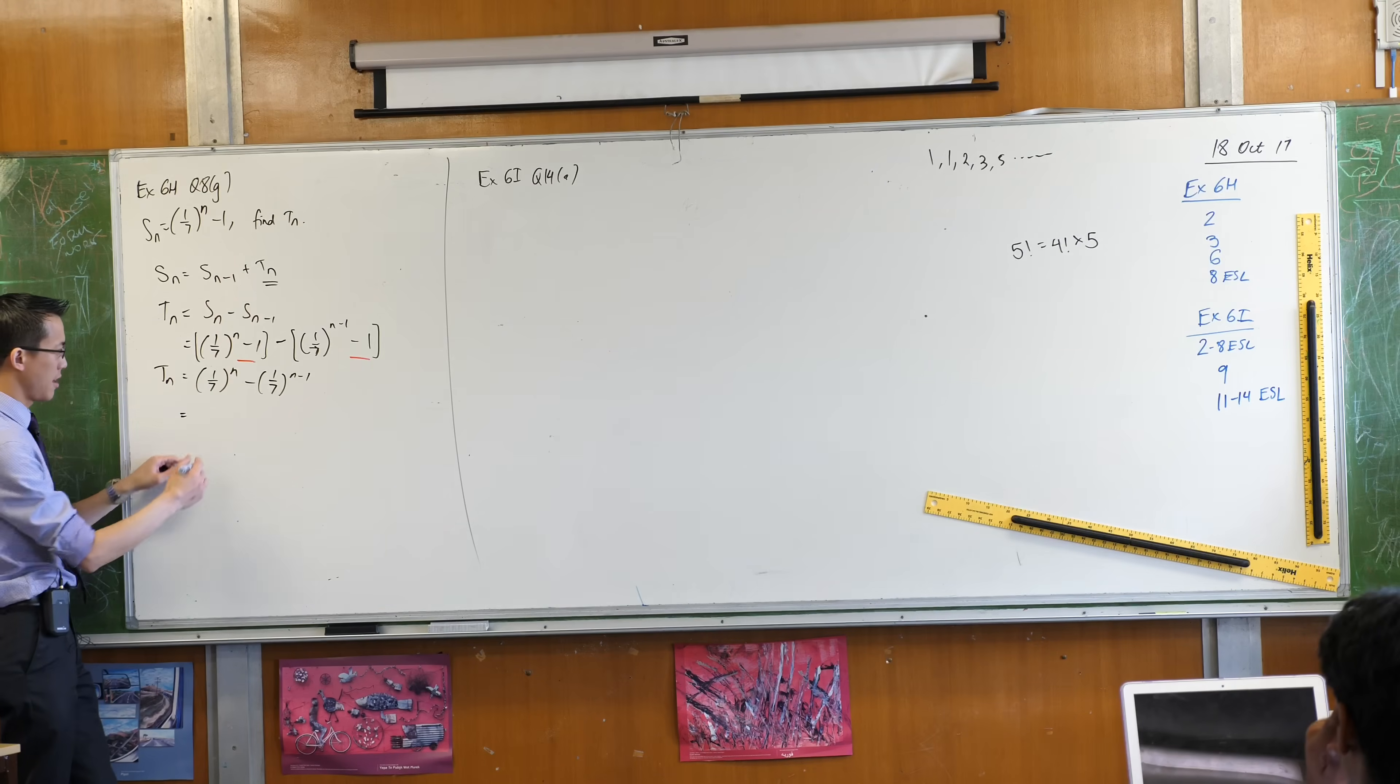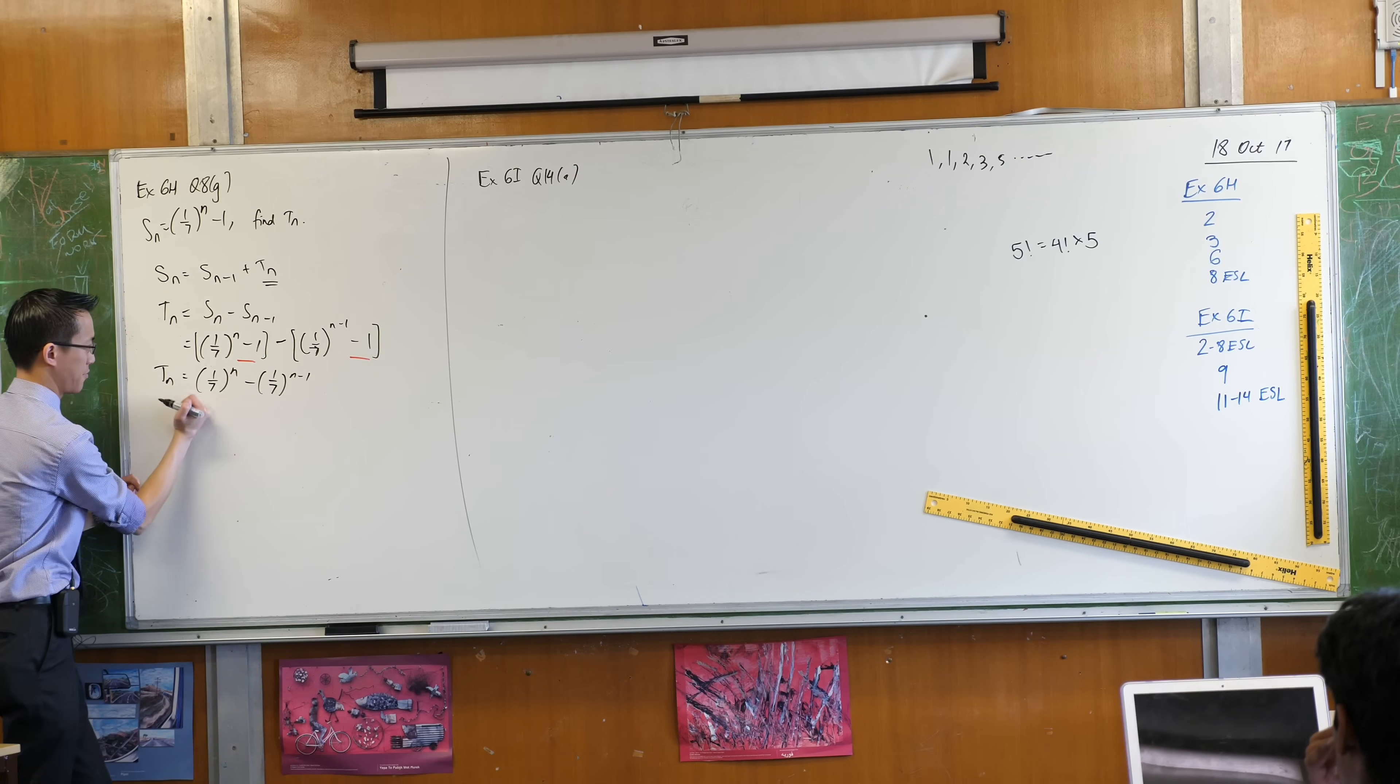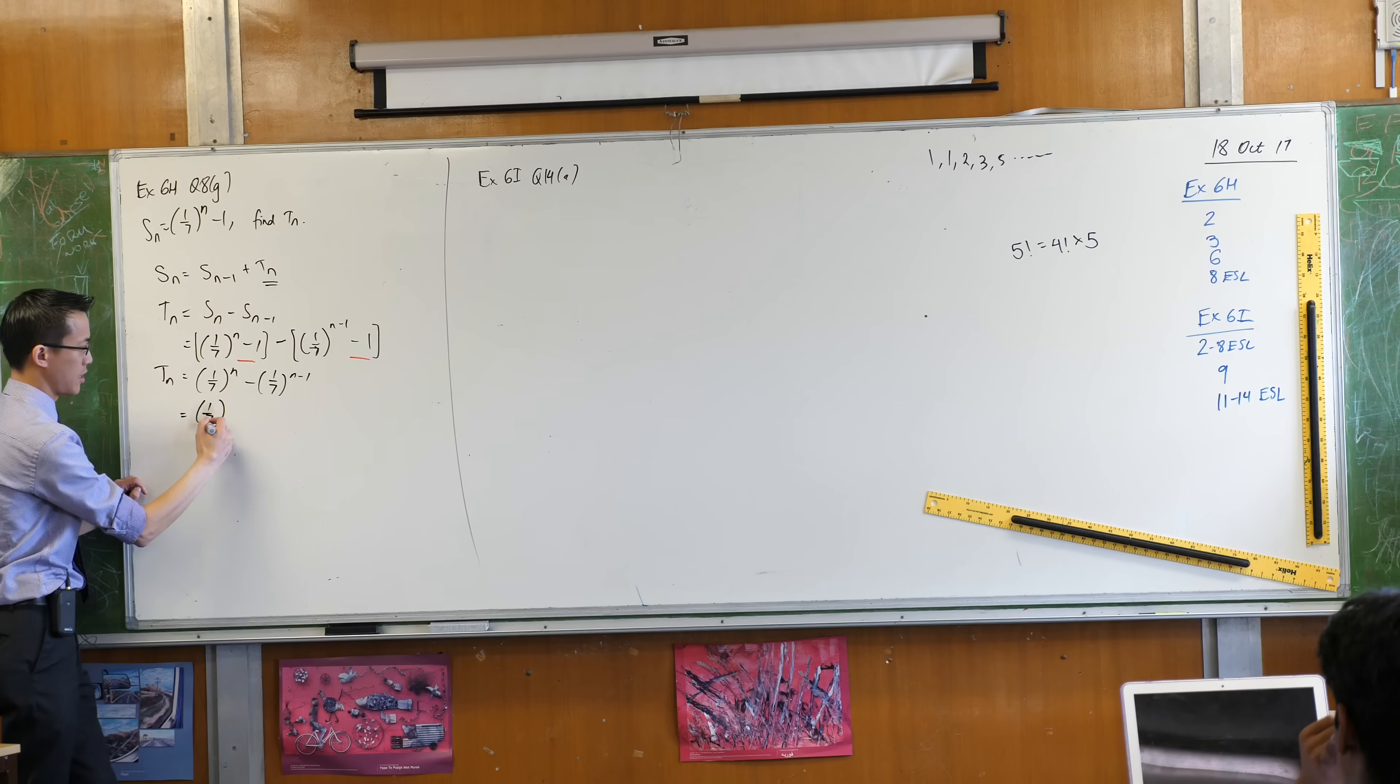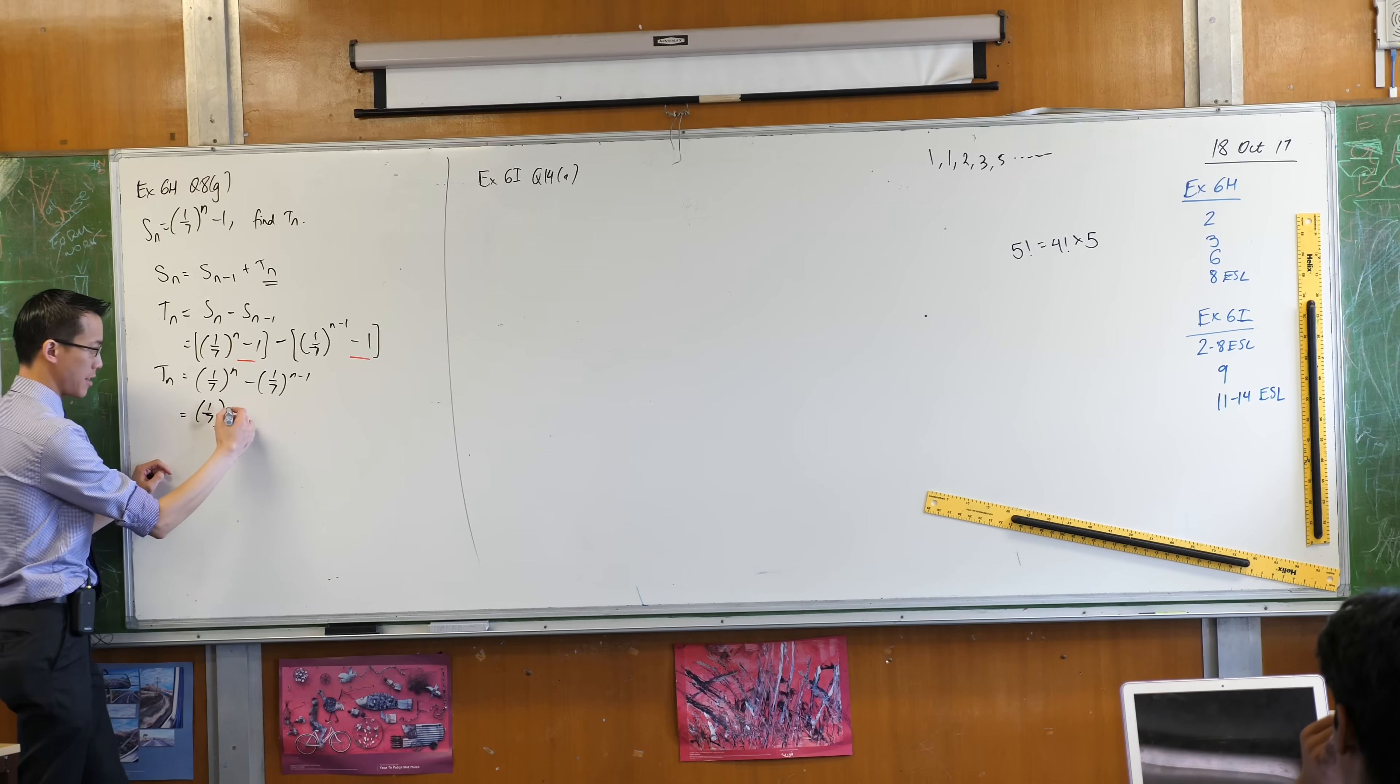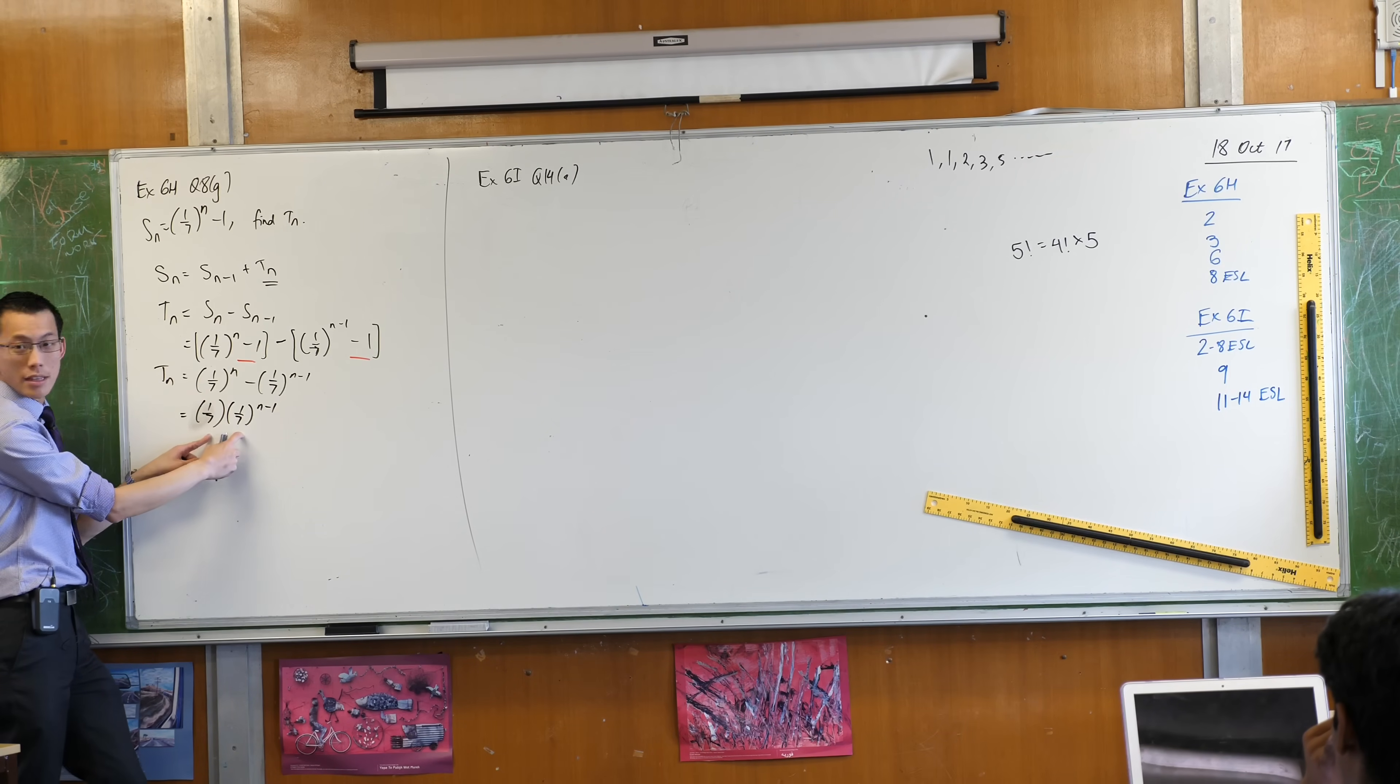This is 7 lots of this. Wait, did I get that right? Or is it 1 over 7 lots? It's 1 over 7 lots. 1 over 7, right? Because think about this, right?